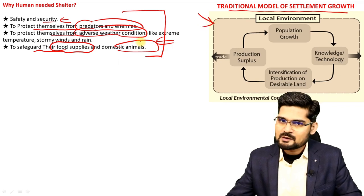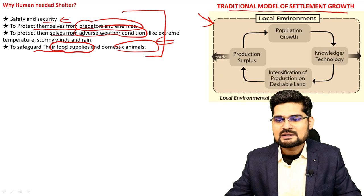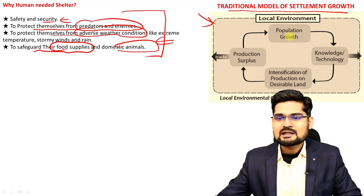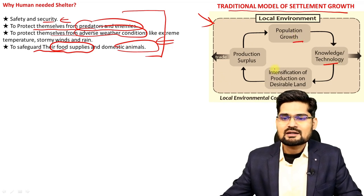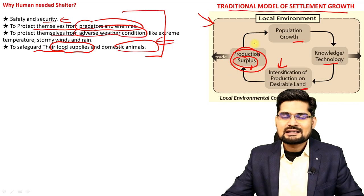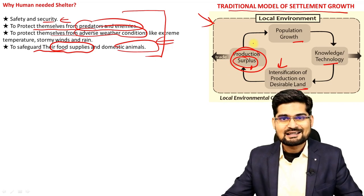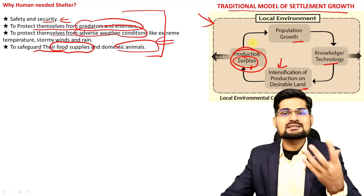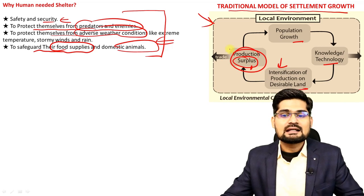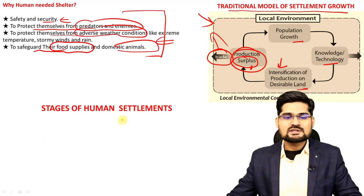The traditional mode of settlement growth can be understood through a flow diagram. Local environments constrained population growth; knowledge and technology led to intensification of production; desirable land and surplus production enabled change of land use; rural areas promoted surplus leading to trade and further settlement development. Surplus production is the most important concept in the creation of urban settlements.